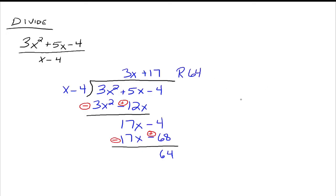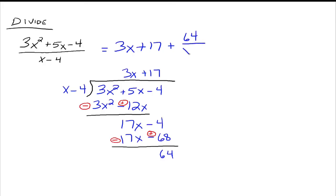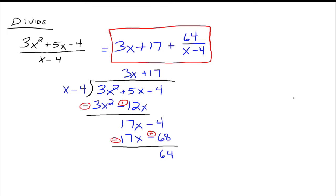We're not going to write the R 64 notation anymore. Instead, we write it a more mathematical way. The 3x plus 17 is the quotient, and the 64 is the remainder. So 3x squared plus 5x minus 4 divided by x minus 4 equals 3x plus 17, plus 64 divided by x minus 4 — that's the remainder divided by the divisor. That is how we write the quotient plus the remainder part.